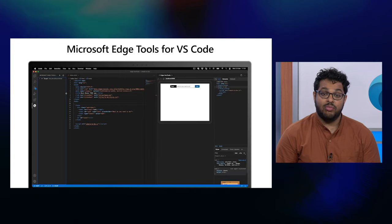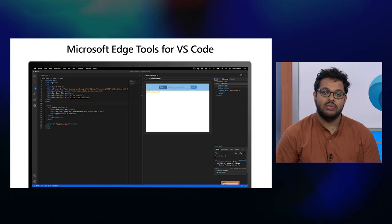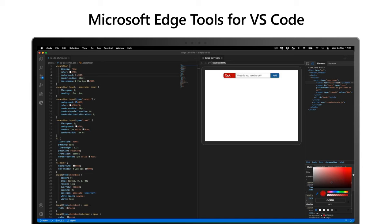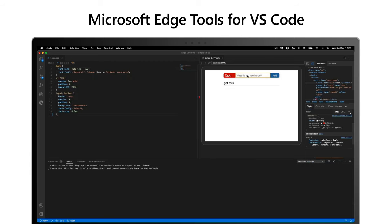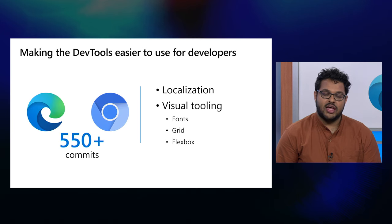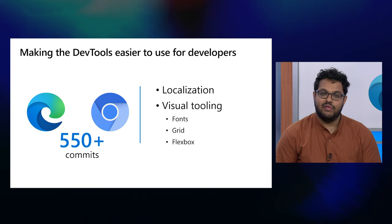Another common theme we've heard from web developers is that context switching between your code editor and the browser can be a bit of a hassle. With the Microsoft Edge Tools for VS Code extension, you can use the full power of the DevTools directly from VS Code. By launching a headless browser, you don't even have to manage a separate browser window — you can inspect elements, change styles, and log messages from the console without ever leaving VS Code. Scott counted 550 changes in the DevTools part of the Chromium code base since last year's Build, but counting from when we first began our journey in Chromium, we've actually landed over a thousand commits in Chromium.